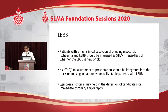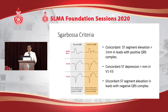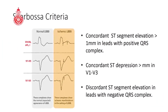The Sgarbossa criteria may help identify acute ischemia in LBBB. In normal LBBB, QRS complexes are mostly negative in V1 to V3. Sgarbossa suggested that concordant ST elevation more than 1 mm in leads with positive QRS complexes, or concordant ST depression more than 1 mm in V1 to V3, or discordant ST elevation more than 5 mm in negative QRS complexes are all suggestive of acute ischemia.